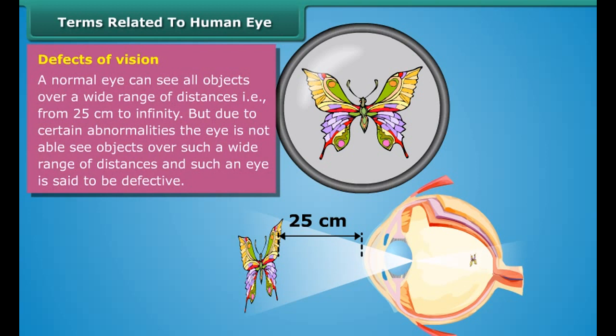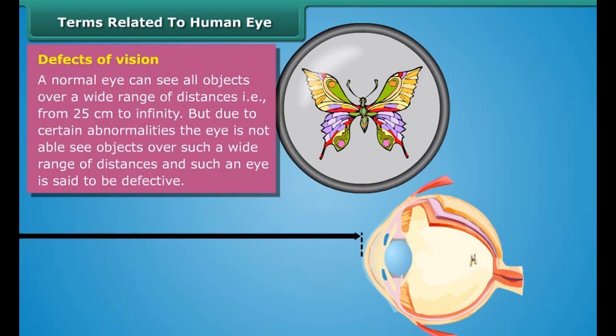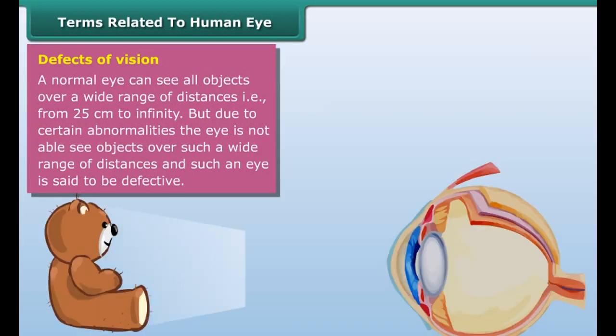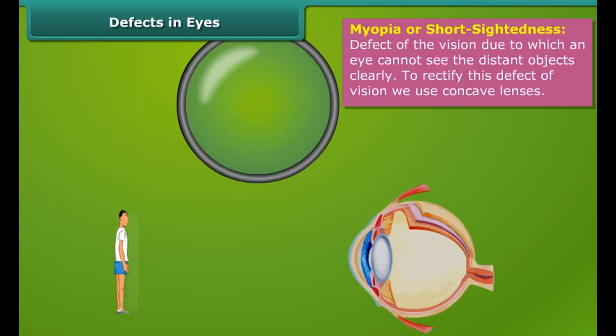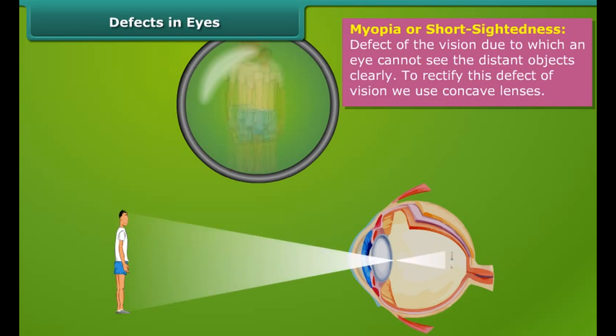A normal eye can see all objects over a wide range of distances, that is from 25 cm to infinity. But due to certain abnormalities, the eye is not able to see objects over such a wide range of distances, and such an eye is said to be defective. Some of the defects of vision are described here.